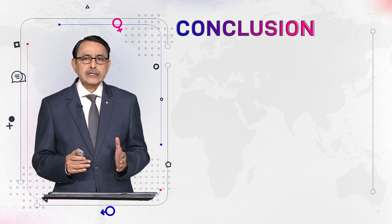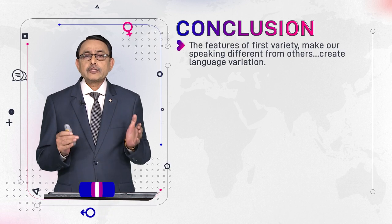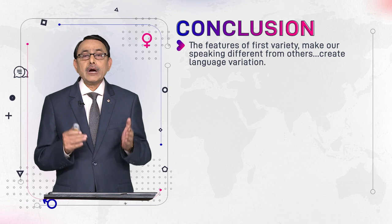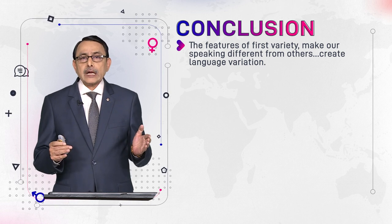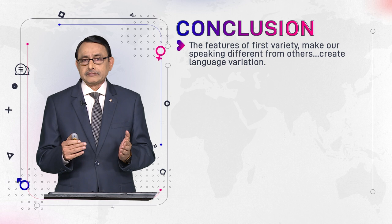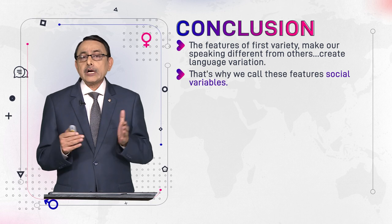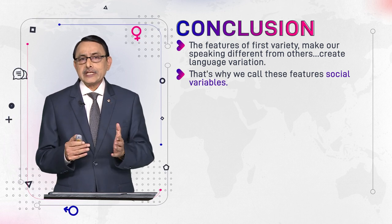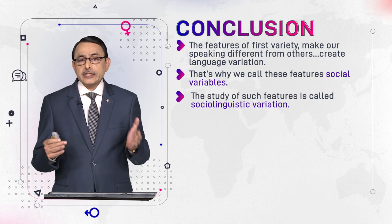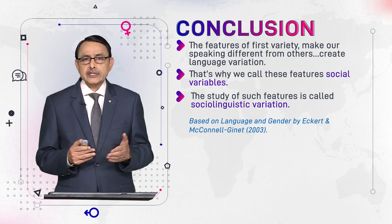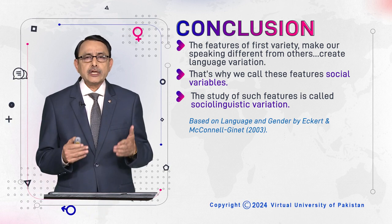Our variety also reflects our age, profession, and gender. So all these features are attached to the variety of language we are learning. The features of our first variety make our speaking different from others — these features create language variation. That is why we call these features social variables, and the study of such features is called sociolinguistic variation, or variational sociolinguistics.